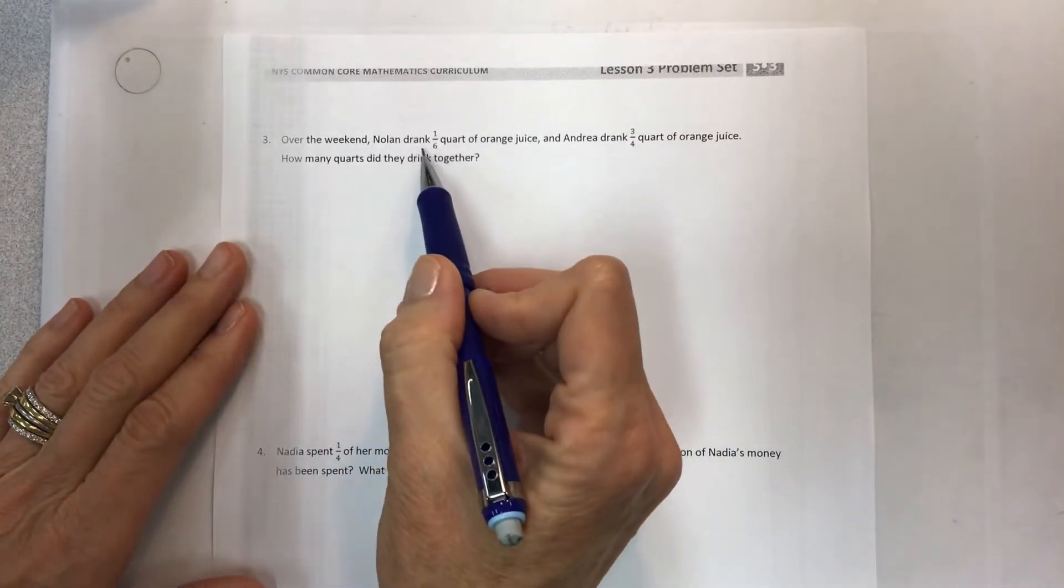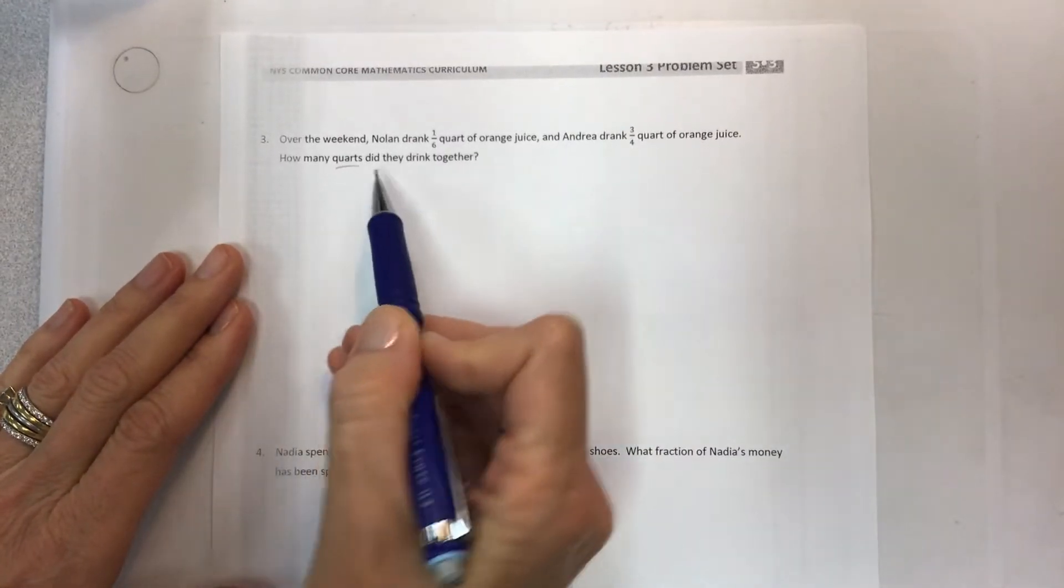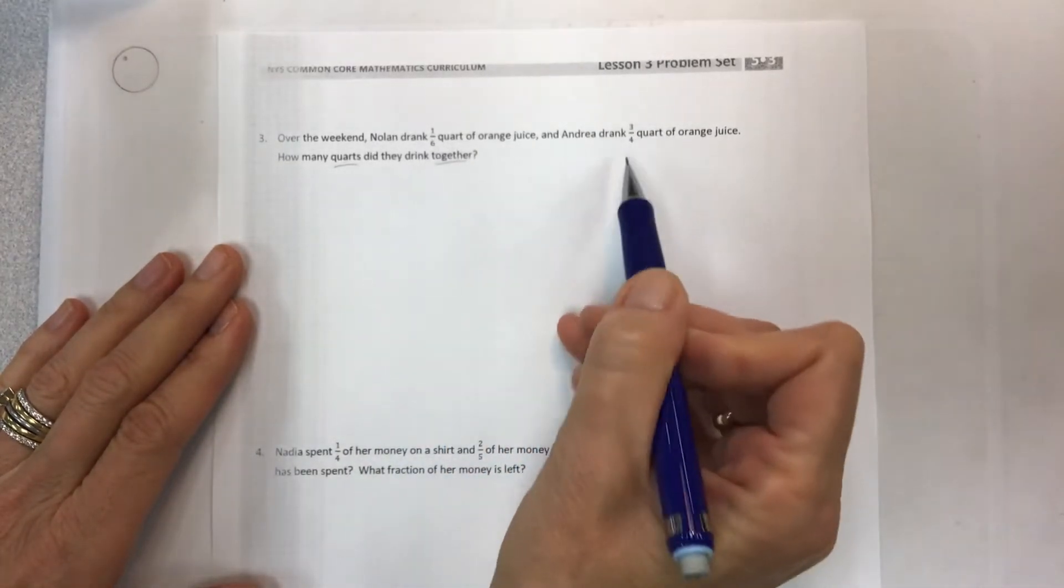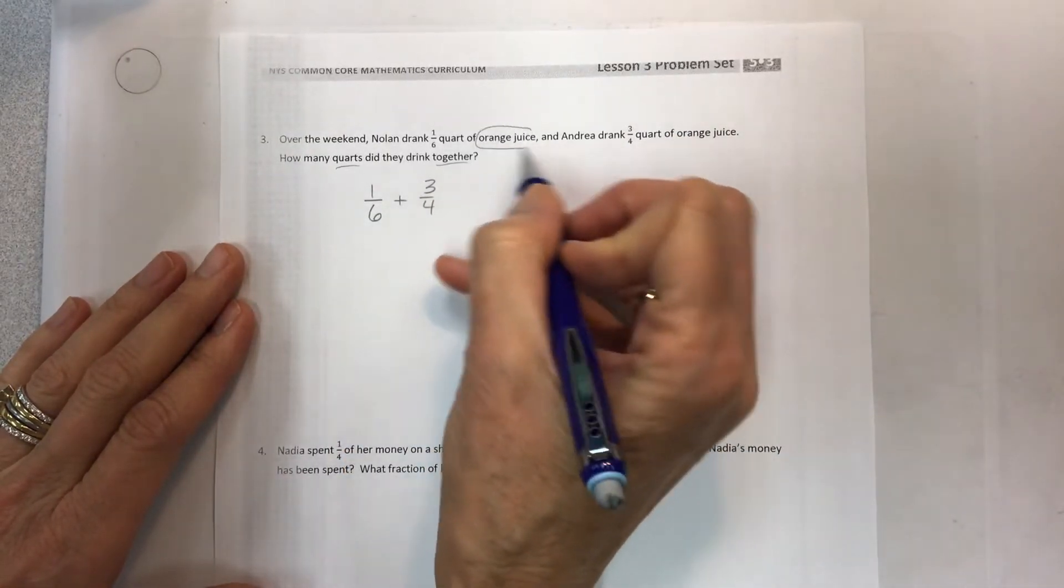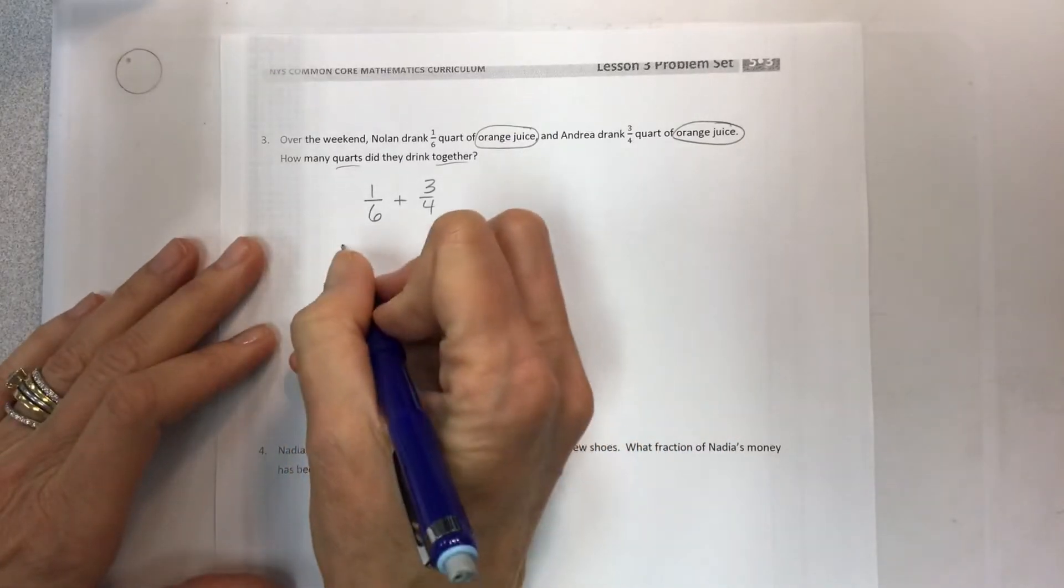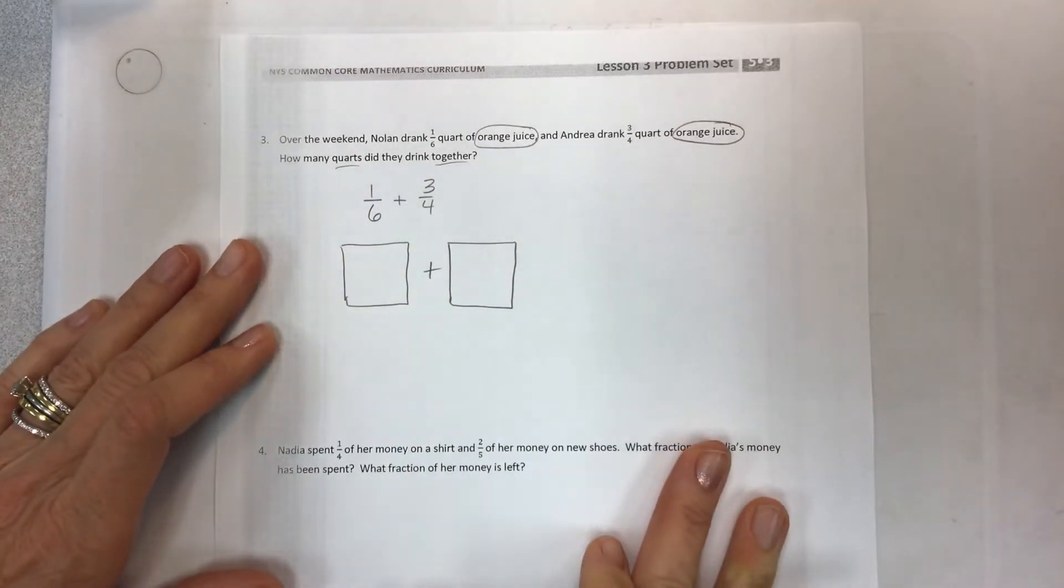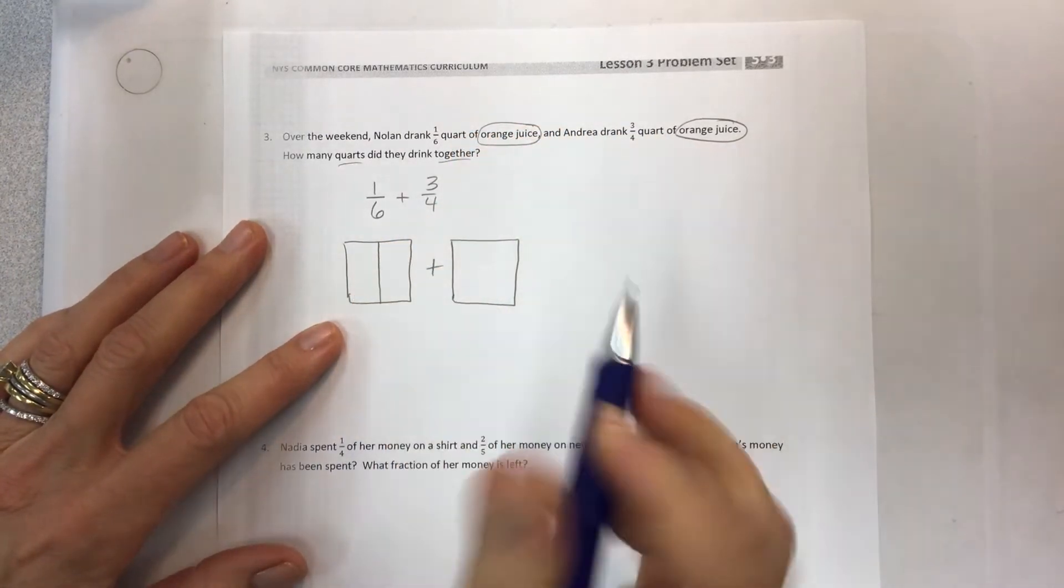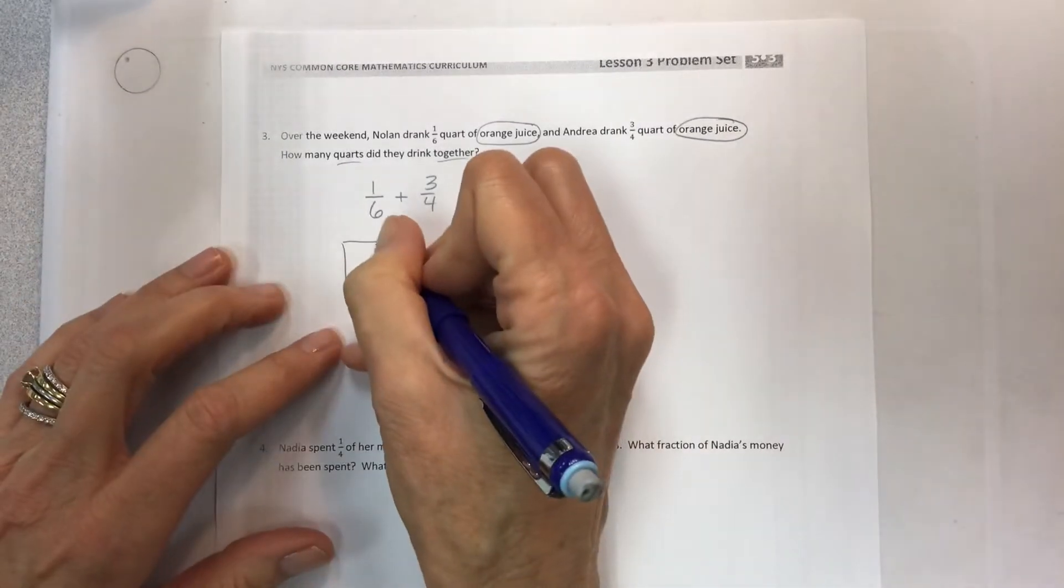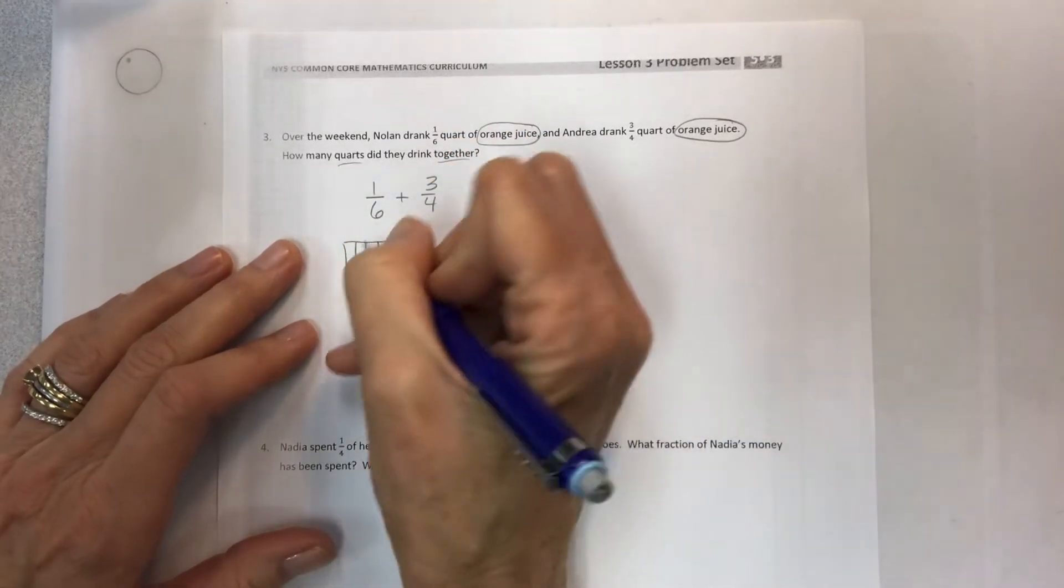Let's do the last page and the next couple of problems. Over the weekend, Nolan drank 1/6 quart of orange juice and Andrea drank 3/4 quart of orange juice. How many quarts did they drink together? Here we have our two fractions that have different denominators - 1/6 and 3/4. They both drank orange juice so we're gonna combine these drinks, but we don't have a common denominator so let's make one.